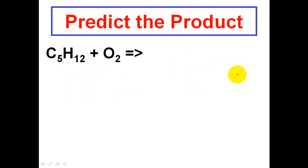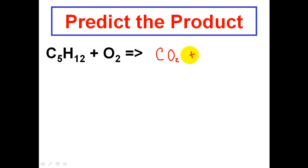The very last thing we're going to look at is a combustion reaction. These are probably the easiest reactions to predict products for. In a combustion reaction, the products are always going to be CO2 and H2O — that's the answer every single time you see a combustion reaction. The product is always CO2 and H2O.